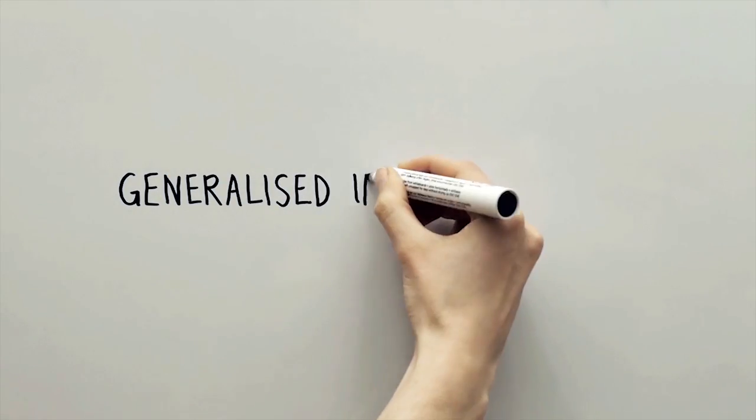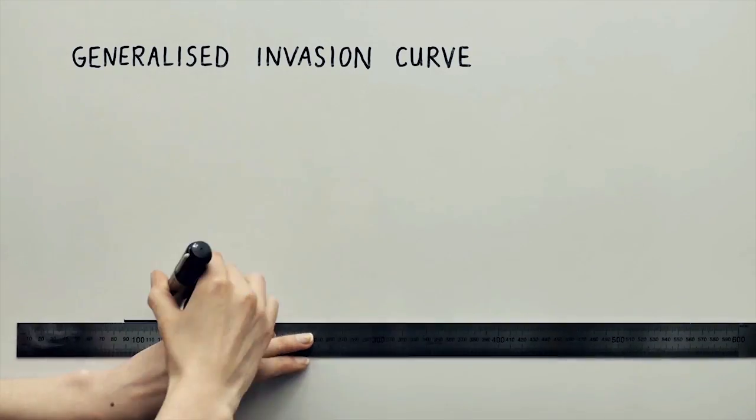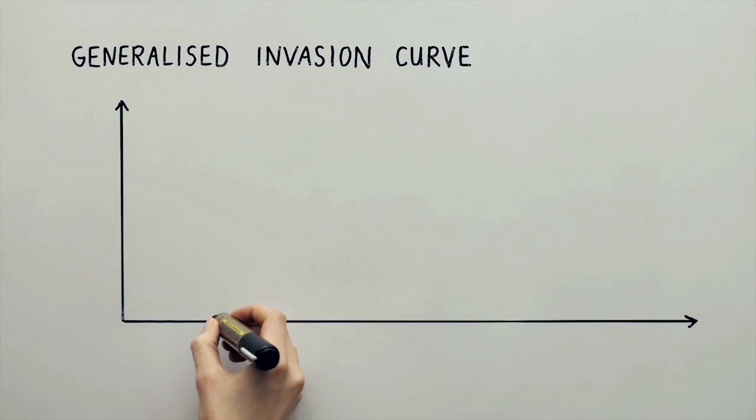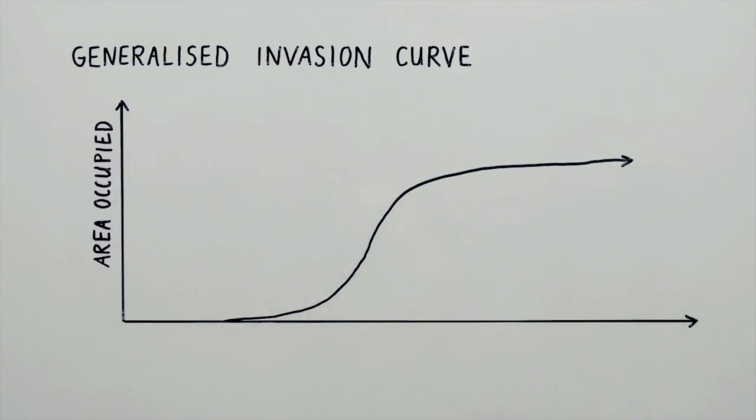The generalised invasion curve is a useful tool to summarise where government, industry and community should direct efforts and investments at various stages of an invasive species incursion. The curve illustrates the increasing area occupied by an invasive species over time.